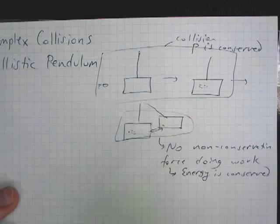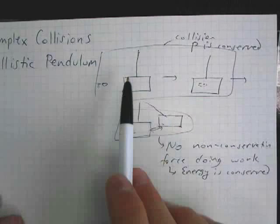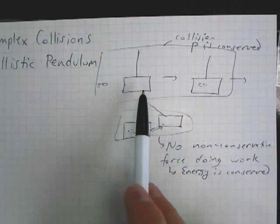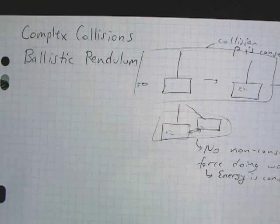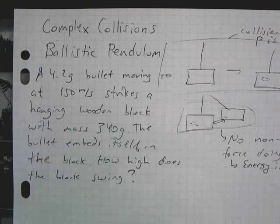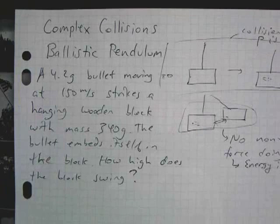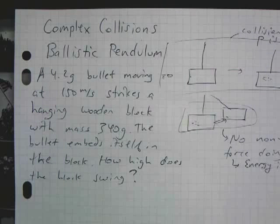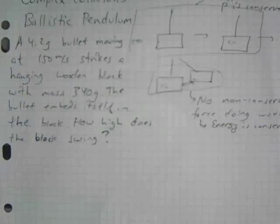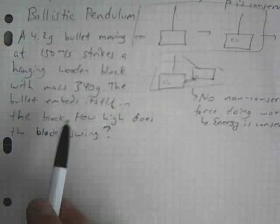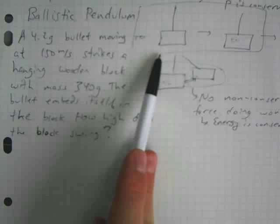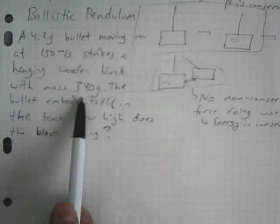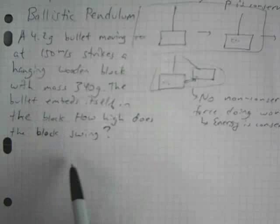So this is a two-part problem. You apply conservation of momentum to the collision between the block and the bullet. And then you apply conservation of energy to the two swinging up to a particular height. A problem that you might see using a ballistic pendulum is something like this. You have a 4.2-gram bullet moving at 150 meters per second, and it hits a hanging wooden block that has mass 340 grams. The bullet embeds itself in the block. The question is, how high does the block swing?